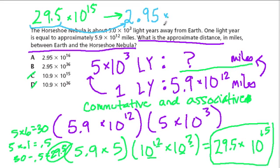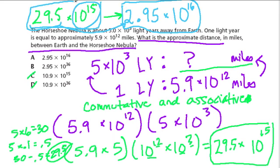But I don't want to change the value of my number. So if I made this part of our number 10 times smaller, I should make this part of the number 10 times larger. So that's going to be 10¹⁶. And there I'm just keeping balance because these two numbers, 2.95 × 10¹⁶ and 29.5 × 10¹⁵ are equivalent.